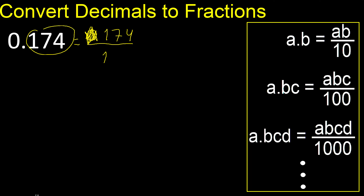After the point, there are 3 numbers, therefore 3 zeros. Can be simplified because can be divided by the same number.